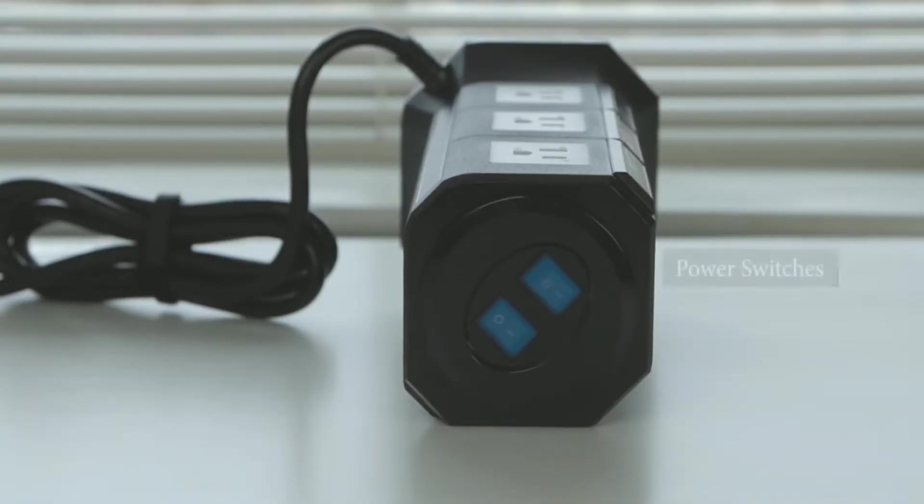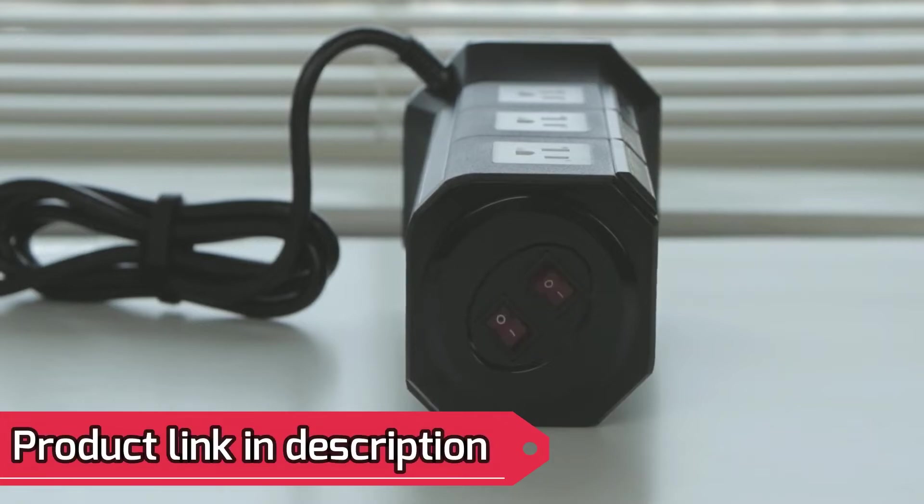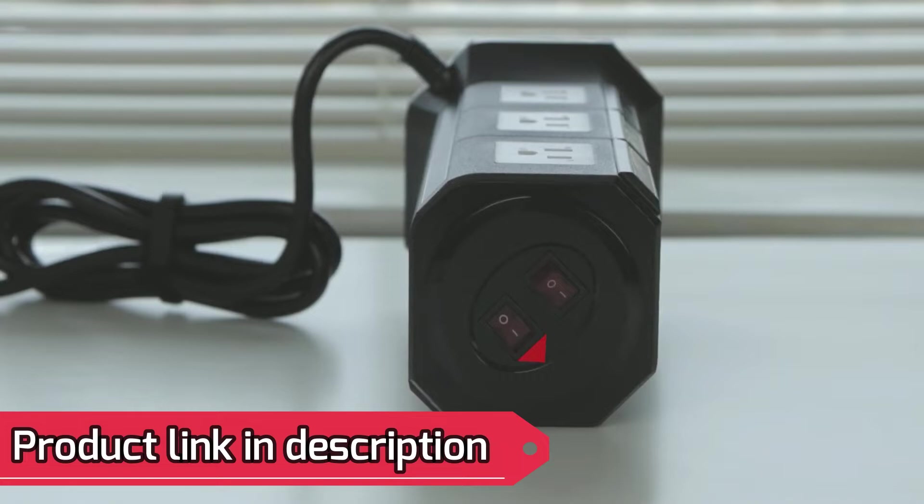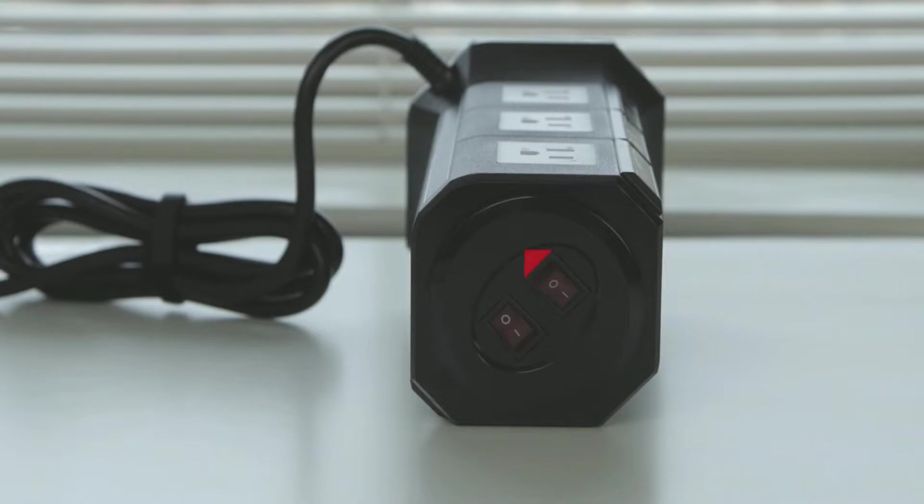Up top you have two power switches with an LED and an arrow indicator for easy control. These arrows indicate which AC outlet the switch controls. The arrow on the left points to the front, meaning the left switch controls the USB ports and the AC outlets on the front. The arrow on the right points to the rear, controlling the outlets on the rear.